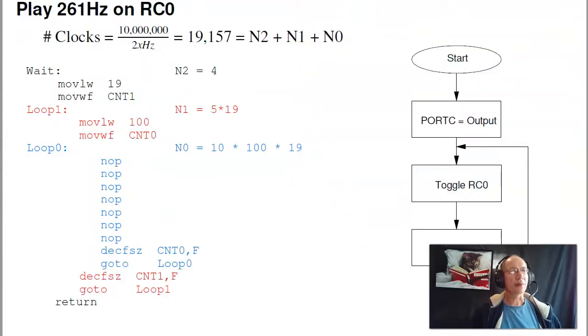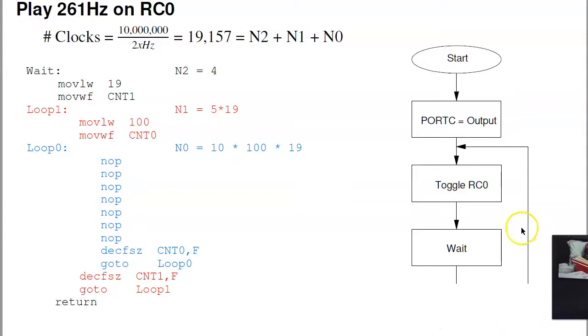If I want to slow it down. Again, the PIC is really fast. It's 1.6 MHz if I do nothing. If I throw in a wait loop, I'm going to toggle RC0 then wait. Now I can actually set the timing, set that wait loop, and I can tell you the frequency of the output.